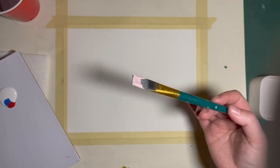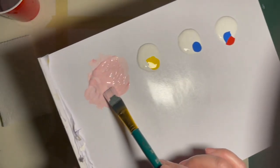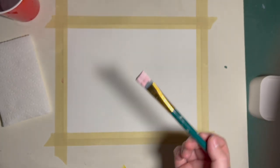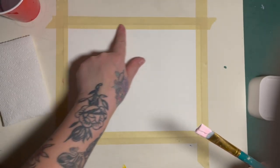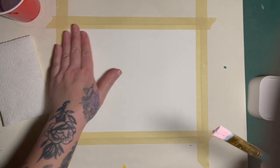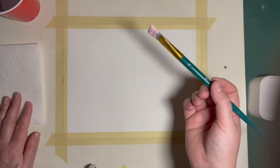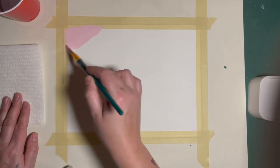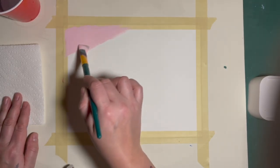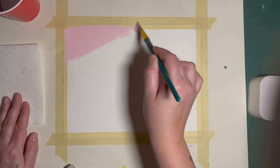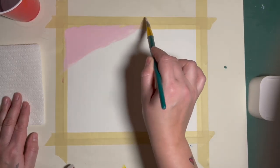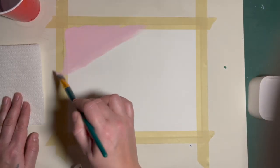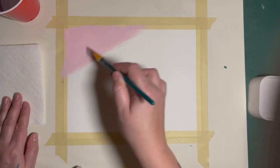And we're going to take that pink. Make sure you get a nice amount on your brush. And we're going to start in the top corner here, and we're going to start to create that nice pastel, fluffy cloud sky. And you just take your brush back and forth. And I would say that's getting close to as much pink as I want in there.